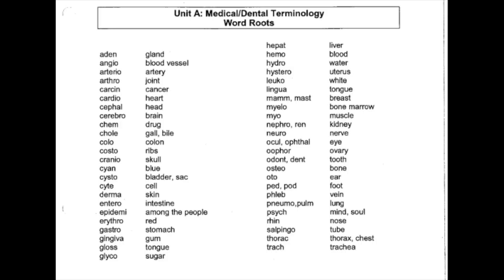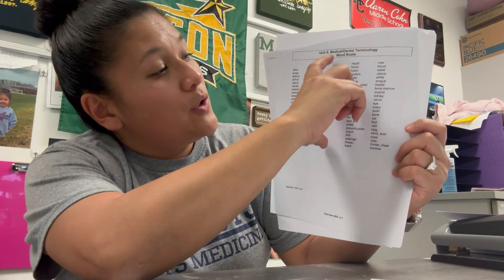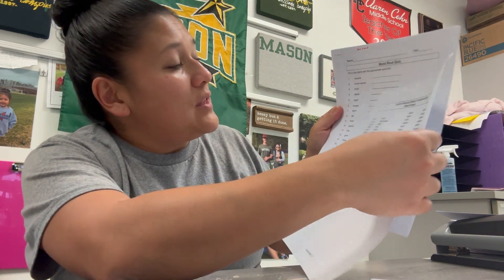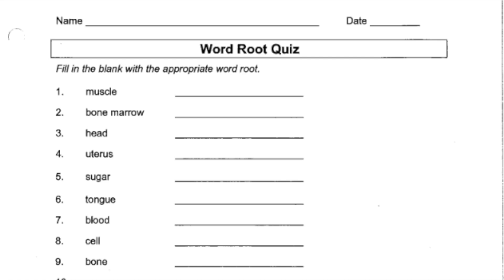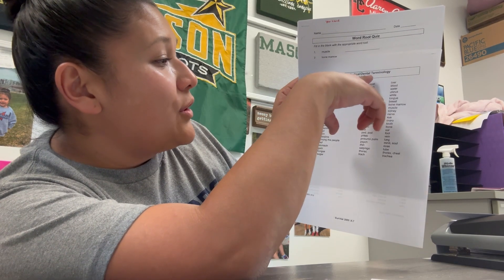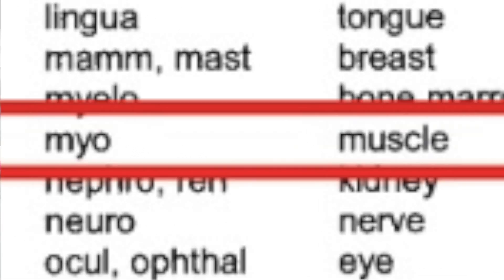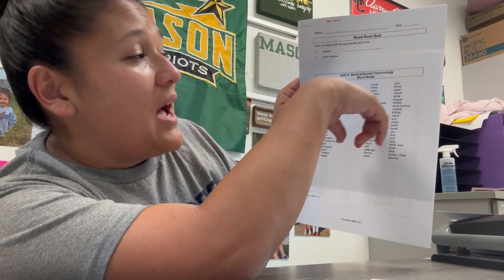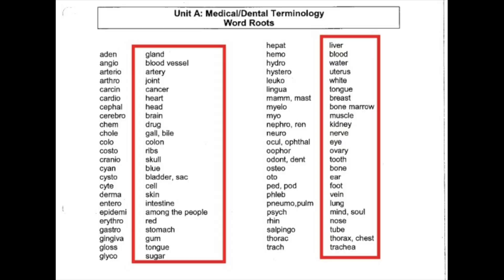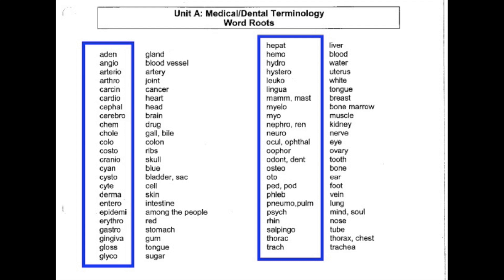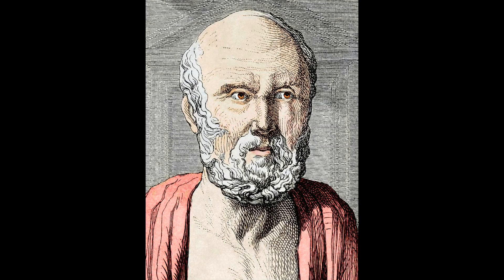The first worksheet is the word root quiz. Use the dental and medical terminology word roots — the shorter word bank. It gives you the English translation first, so find the matching root. For example, the first one says 'muscle,' so look through the word roots, find muscle, and write in 'myo.' The reason most medical terms are in Greek or Latin is because the origin of medicine traces back to Hippocrates, and much of what he documented was written in Latin or Greek.